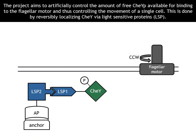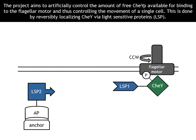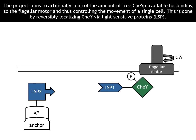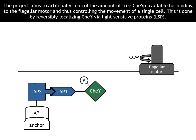The project aims to artificially control the amount of free CheYP available for binding to the flagellar motor, and thus control the movement of a single cell. This is done by reversibly localizing CheYP via light-sensitive proteins.